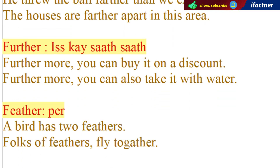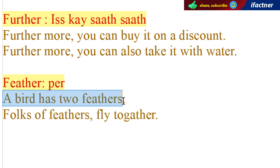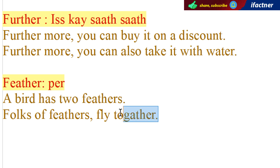Doostoon aaj ka chautha word hai feather. Feather ka meaning hoota hai par — jis tarah chiriya ke par hootay hain. A bird has two feathers — parinday ke do par hootay hain. Is ke alawa ek English mein idiom hai: Folks of feathers fly together — jin ki aadatay ek jaisay hootay hain, woh ek saath hi uratay hain.